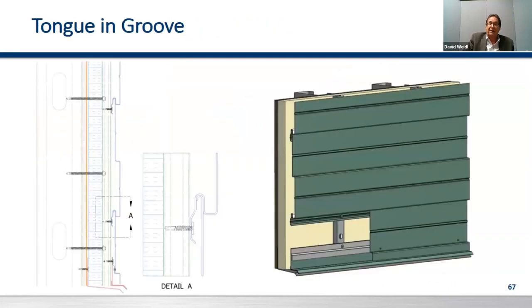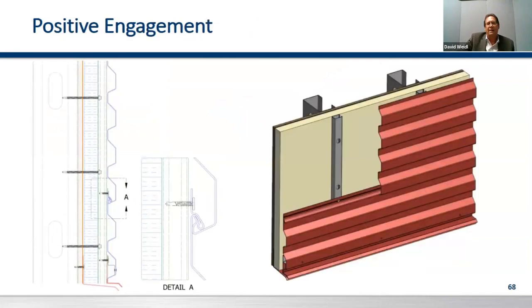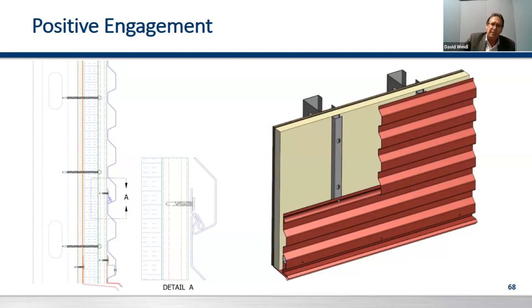For tongue-and-groove concealed fasten panels, installation direction matters critically. This type is installed from the top down — you do not want to turn that groove upside down and catch water running down the wall and have it sit in the groove. With a positive or continuous engagement panel — more of a hook-latch-pull type — you install from the bottom up, and that's where you get into more of your profiles.